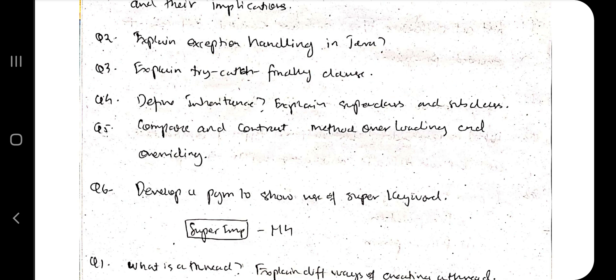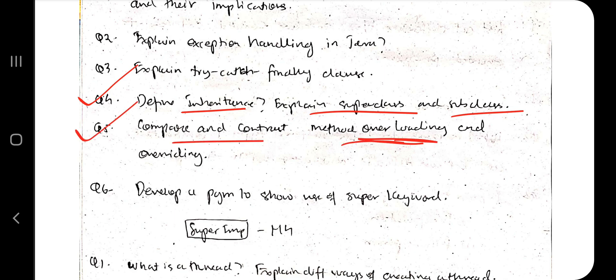Moving on, we have inheritance — a super important concept. You need to know superclass and subclass and how to implement it using classes and objects. Next, we have: compare and contrast method overloading and method overriding, another super important question where you have to write two classes and show examples.